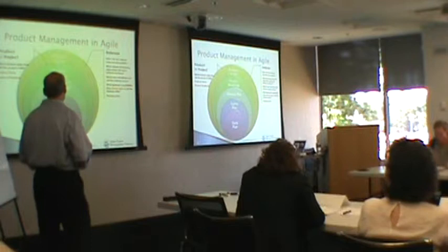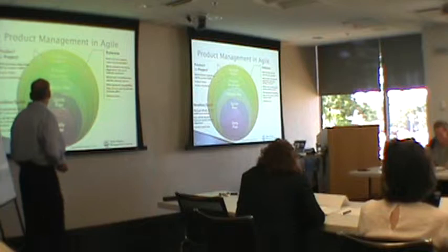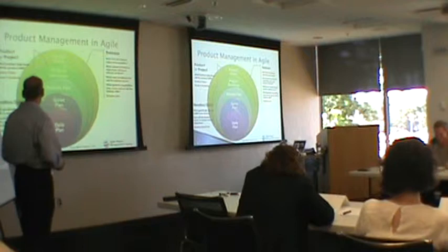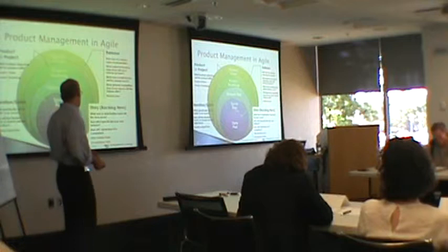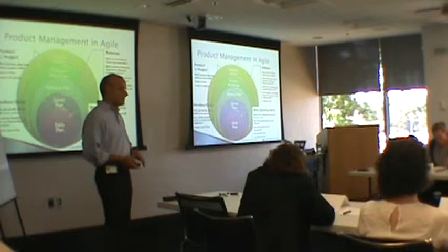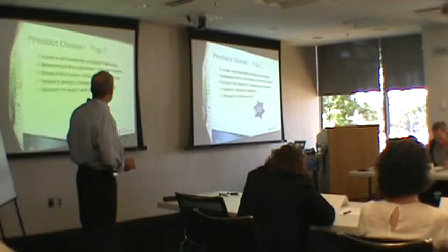Within each iteration or sprint, you need to know what you'll specifically build and how that iteration gets you toward the release objectives. Each story needs to be very clear on how it will serve the stakeholder, how it will behave, and how you'll know when it's done. These are all the product management pieces of an agile project.